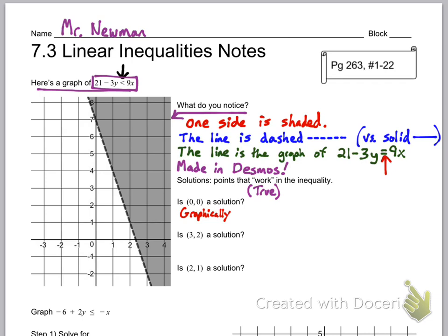Well, graphically, look at (0, 0). It's right there. It is not shaded in, so it is not a solution. No, because it is not on the shaded side. Any point that is on the shaded side is a solution. Any point that is not on the shaded side is not a solution.